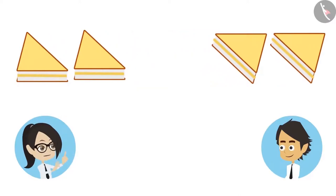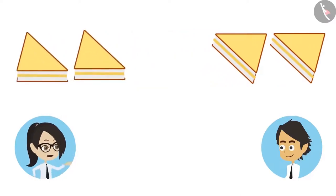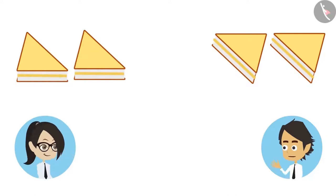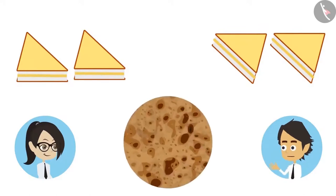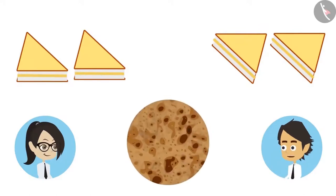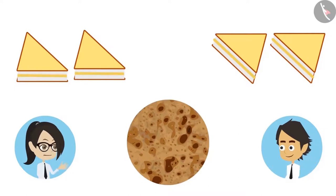Now look, I have two sandwiches and you too have two sandwiches. Yes, now I have half of your sandwich. But we could count the sandwiches and find the number of halves. But I have only one paratha. How will we divide it into two halves?